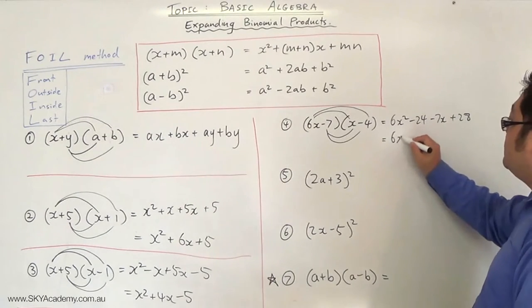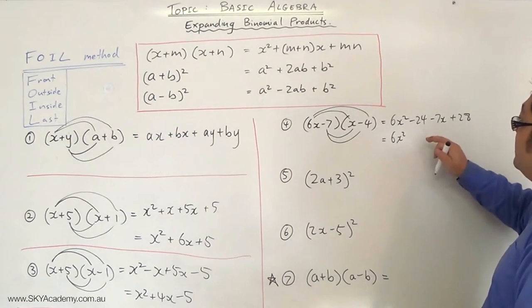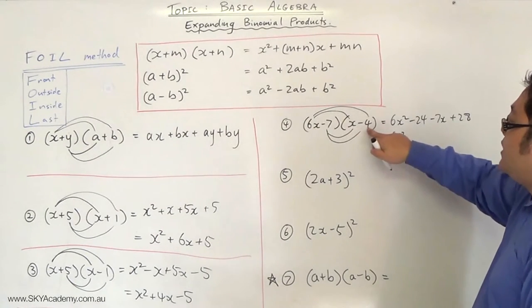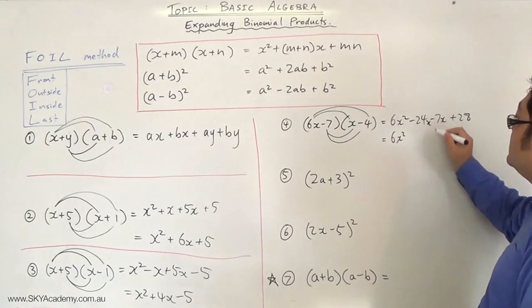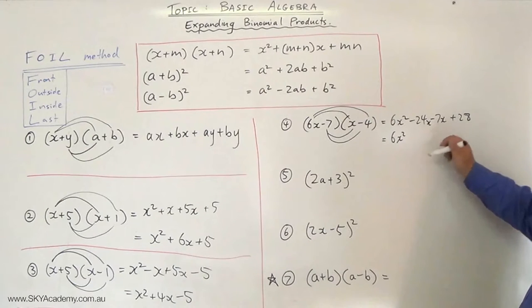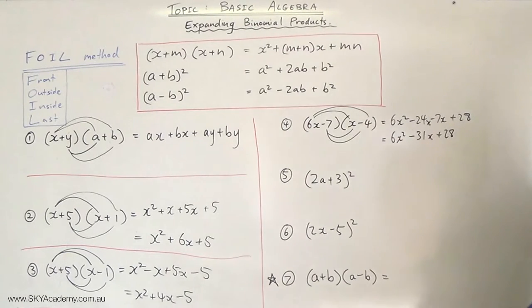6x² just falls down. I've left out an x with the 6x times negative 4, so that should be x. So minus 24x minus another 7x gives you an even bigger minus number, so it's minus 31x plus 28.